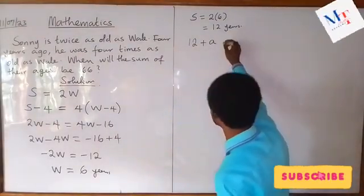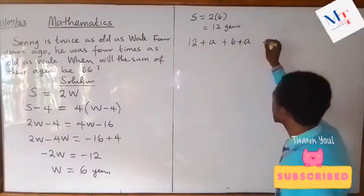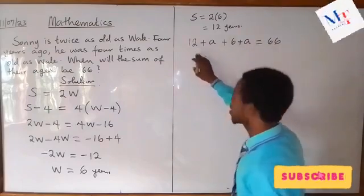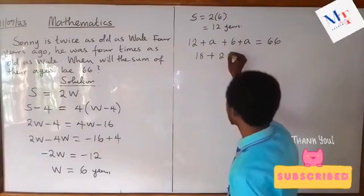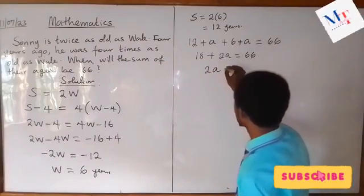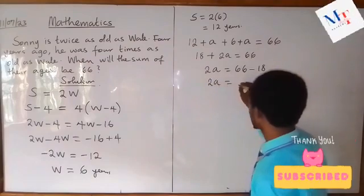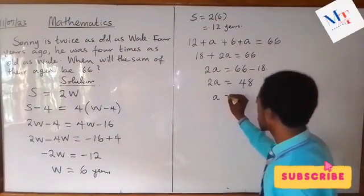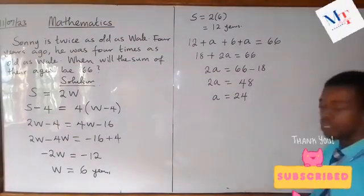The sum of their ages in A years' time will be twelve plus A plus six plus A, and that sum equals sixty-six. Adding the like terms: twelve plus six gives eighteen, and A plus A gives two A. So two A plus eighteen equals sixty-six, meaning two A equals sixty-six minus eighteen, which is forty-eight. Therefore A equals forty-eight divided by two, which is twenty-four. So in twenty-four years' time, the sum of their ages will be sixty-six.